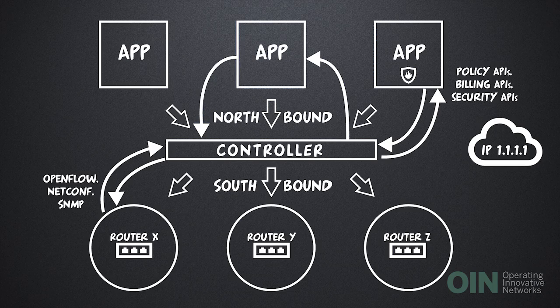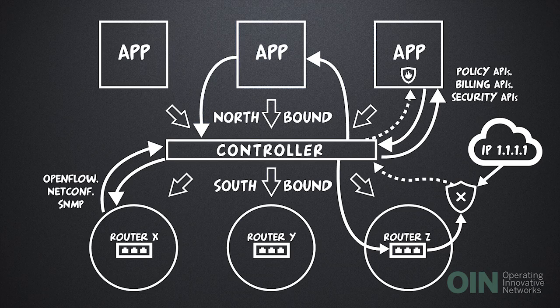It might push out rules on the Southbound API to device Z on the network, telling it to block any traffic on a specific port with source IP 1.1.1.1. Once IP 1.1.1.1 has been blocked, device Z reports this to the controller, which reports back to the application that the task has been completed. If the state of this interface were to change, that would also be communicated for the controller to take appropriate steps to continue the block elsewhere, or potentially to report the service issue to the security application.